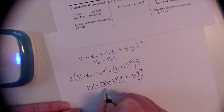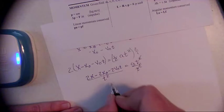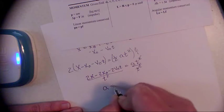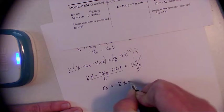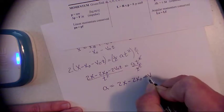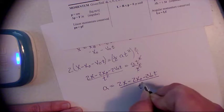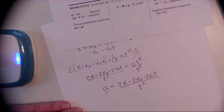These cancel out and we have now successfully solved for a which is what we wanted, and it's 2x minus 2x naught minus 2v naught times t divided by t squared. We have solved for a different variable than this equation actually sets out for, so that's cool.